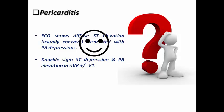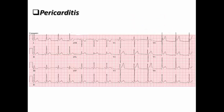The most important feature is the presence of diffuse ST elevation, which is usually concave, associated with PR depression. The concave ST elevation is more suggestive of pericarditis — like a concave or smiley face — signifying a good prognosis. Another important sign is the knuckle sign, which is the reverse in other leads, showing ST depression and PR elevation in AVR, plus or minus V1.